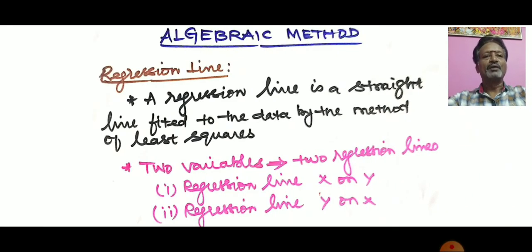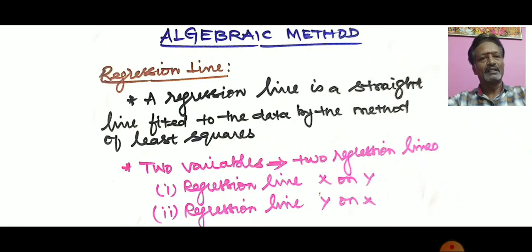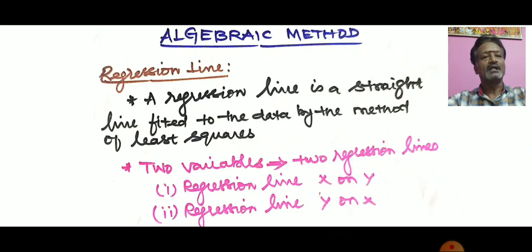In the previous lecture, we discussed about what regression means. Here, regression explains the average relationship between two or more than two variables. The regression will be estimated in two ways: one is by graphical method and another one is by algebraic method. Here we are going to discuss about the algebraic method, that too when all variables are given.